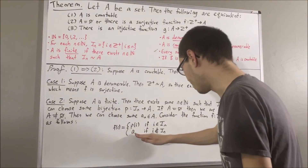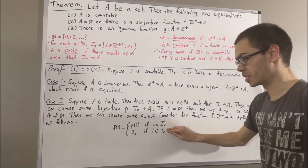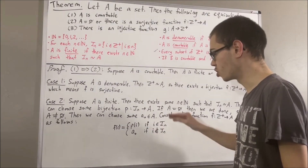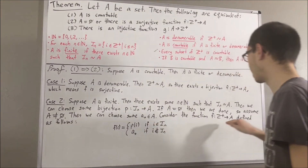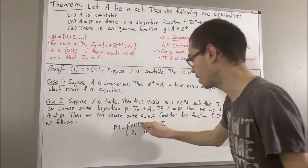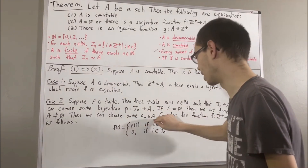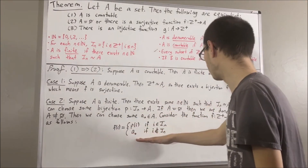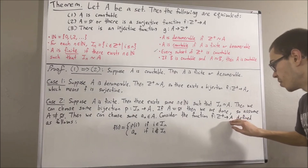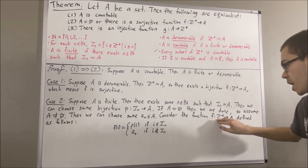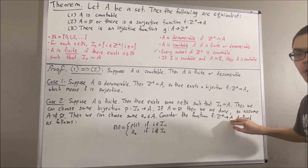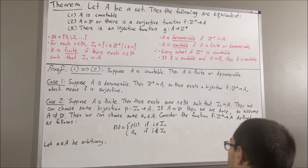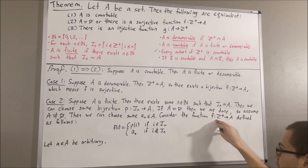This definition makes sense because given that i is a positive integer, exactly one of these conditions is true, and therefore f(i) can only be set equal to one of these values. No matter what value f(i) is set equal to, f(i) is going to be an element of A, because P(i) is an element of A and A₀ is an element of A. The claim is that f is surjective. To prove that f is surjective, we want to show that for every element a in A, there exists an element j in the positive integers such that f(j) is equal to a. So let's give ourselves an arbitrary element a in A.